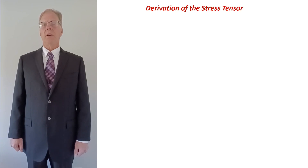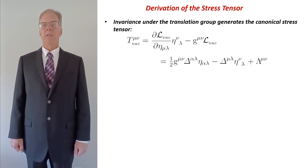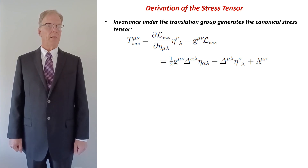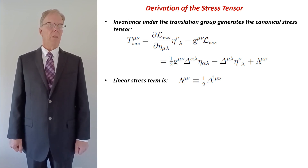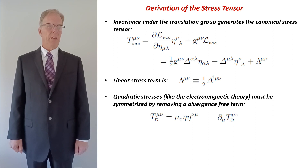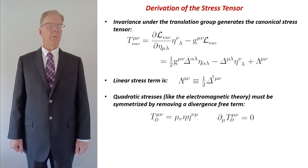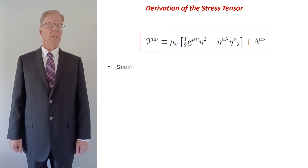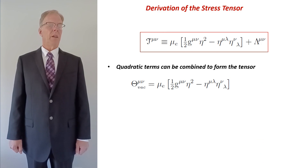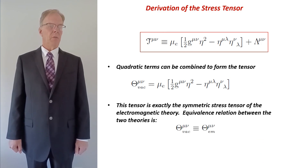We calculate the canonical stress tensor by using the vacuum strain as the field variable. The last term, called lambda mu nu, is determined by the linear term in the Lagrangian and is the transpose of the stress tensor delta mu nu with a factor of one-half in front. The terms quadratic in stresses are not symmetric and, like the electromagnetic theory, must be symmetrized by removing a divergence-free term. The total stress tensor for the vacuum theory is now displayed here in the red box. The quadratic terms are exactly the symmetric stress tensor of the electromagnetic theory and we can write an equivalence relation between the two theories.